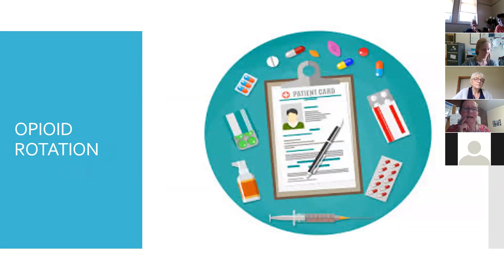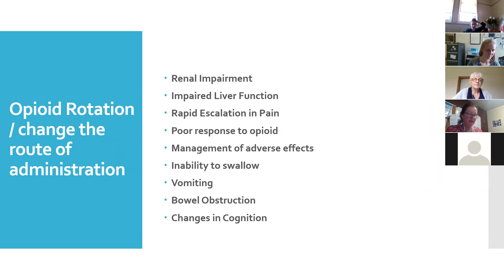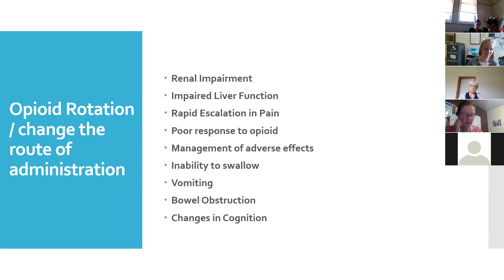The other thing to look at is opioid rotation — why do we need to consider it and what do we mean by it? Opioid rotation may be required for the following reasons: in residents or patients with poor kidney function or impaired liver function, which can mean medications aren't broken down and excreted properly; someone experiencing a rapid increase in pain; a poor response to a current opioid; or to manage severe adverse effects of the current opioid, such as lots of nausea and vomiting.